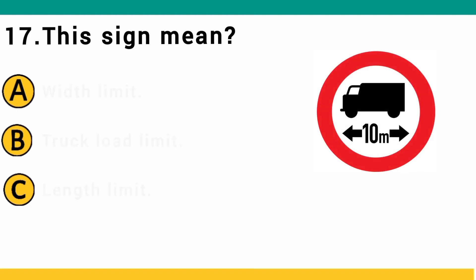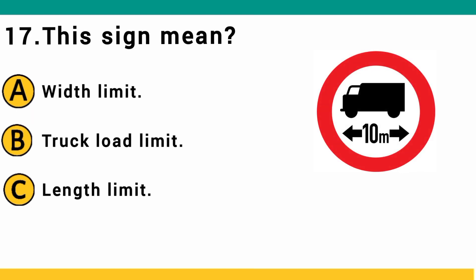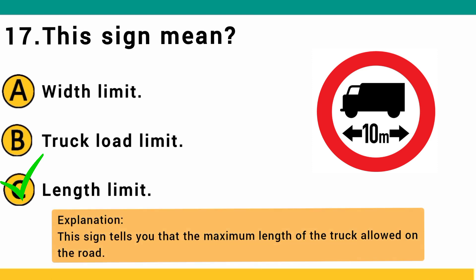This sign means: A) width limit, B) track load limit, or C) length limit. The correct answer is C: length limit. This sign tells you the maximum length of the vehicle allowed on the road.